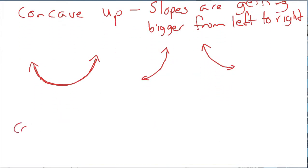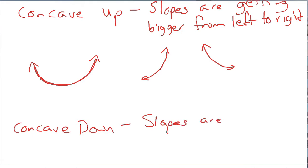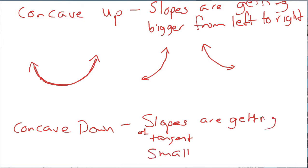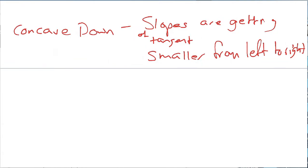So you can bet that concave down is when the slopes of the tangents are getting smaller from left to the right. So when we think about what that looks like, if you drew the whole thing it might look like this, but it might also look like this. So it may just be a part of it.